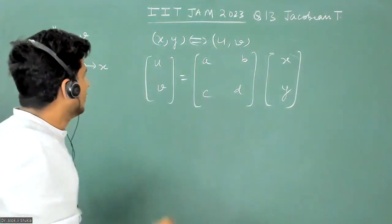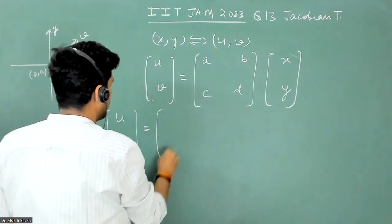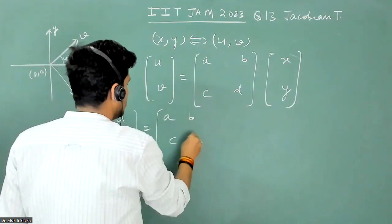So just see the figure and write u, v is equal to a, b, c, d.